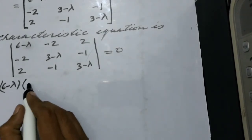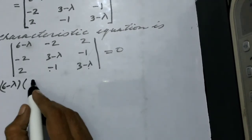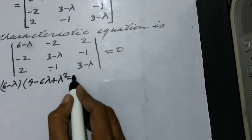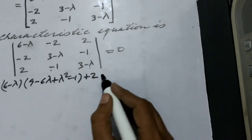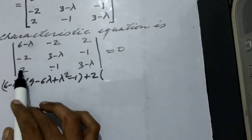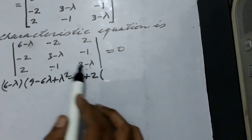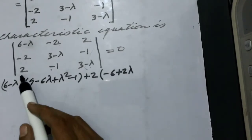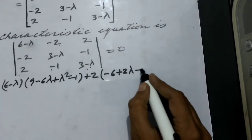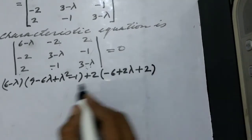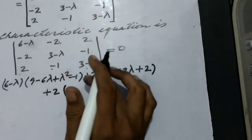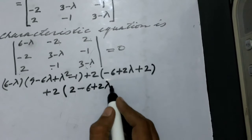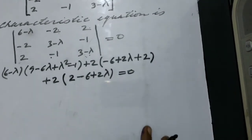Expanding the determinant: (6 minus lambda) times [(3 minus lambda)(3 minus lambda) minus 1] gives 9 minus 6 lambda plus lambda squared minus 1. Then minus (minus 2) bracket: cross-multiplying remaining elements gives minus 6 plus 2 lambda. Then plus 2 bracket: cross-multiplying gives 2 minus 6 plus 2 lambda, all equal to zero.